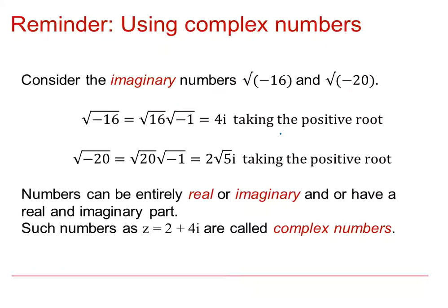So numbers now can be entirely real, all the numbers you met before the introduction of complex numbers, or they can be imaginary, or they can have a real and an imaginary part. So for example z equals 2 plus 4i is a complex number which has a real part called 2 and imaginary part called 4.